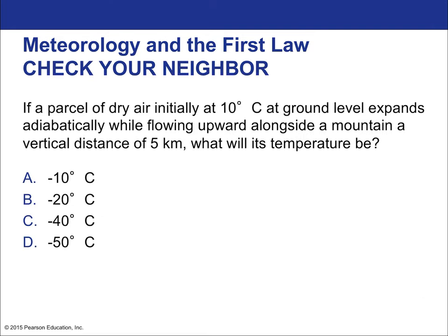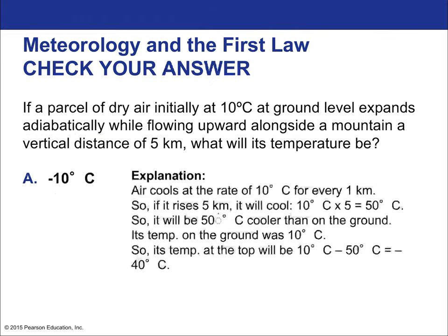For example: if a parcel of dry air initially at 10 degrees Celsius at ground level expands adiabatically while flowing upward alongside a mountain a vertical distance of five kilometers, what will its temperature be? Using the rule of 10 degrees Celsius drop per kilometer, the change would be negative 50 degrees, giving a final temperature of negative 40 degrees. Wait — excuse me — the final temperature is going to be negative 10 degrees Celsius.